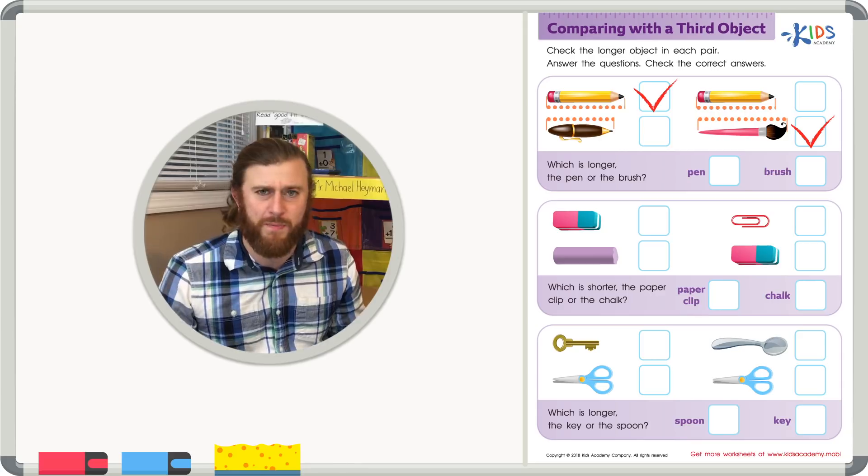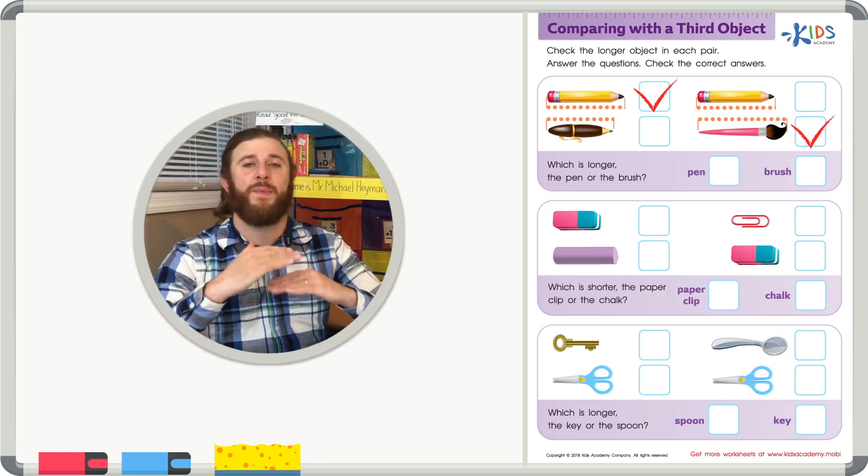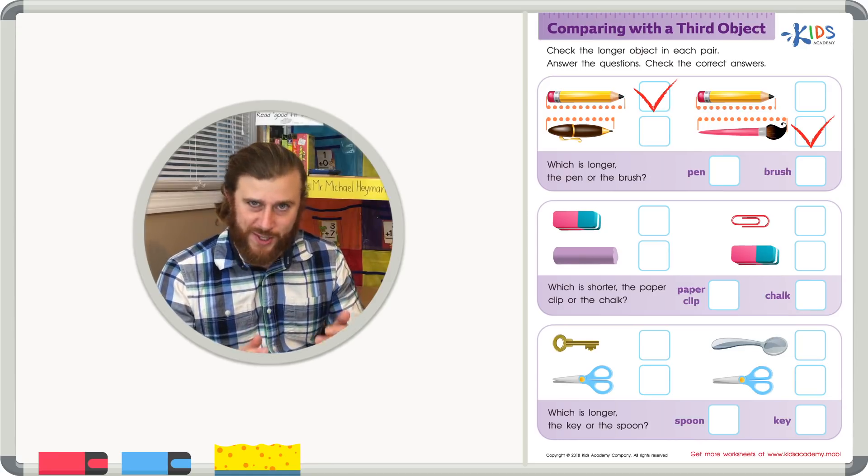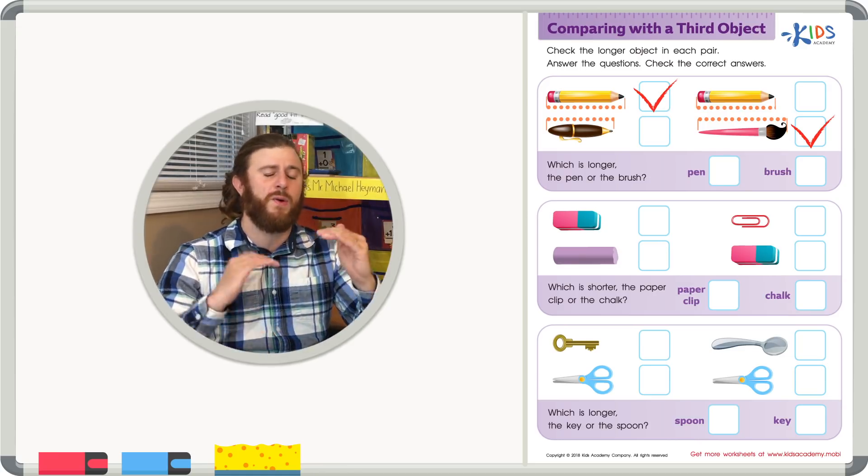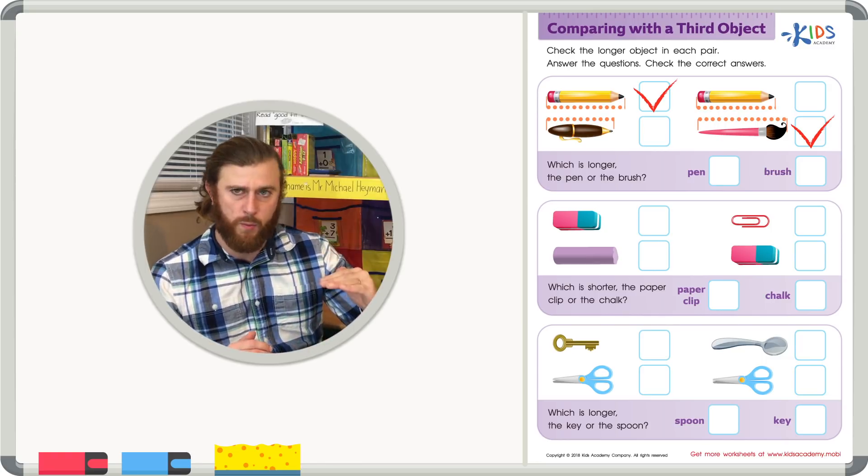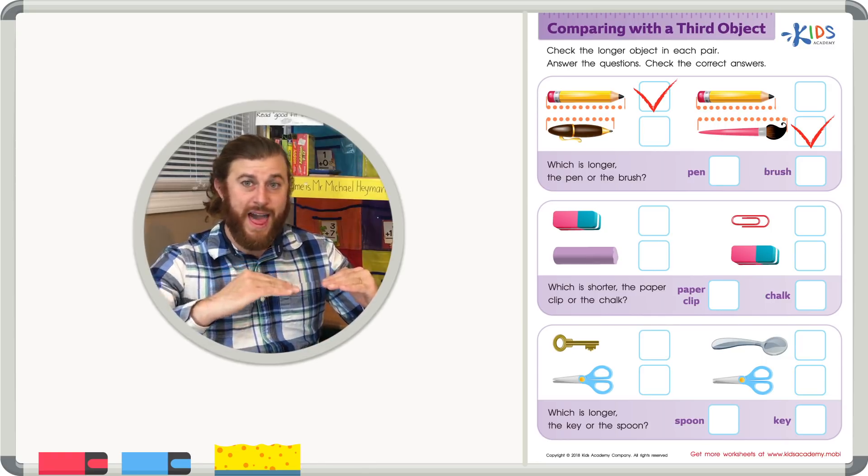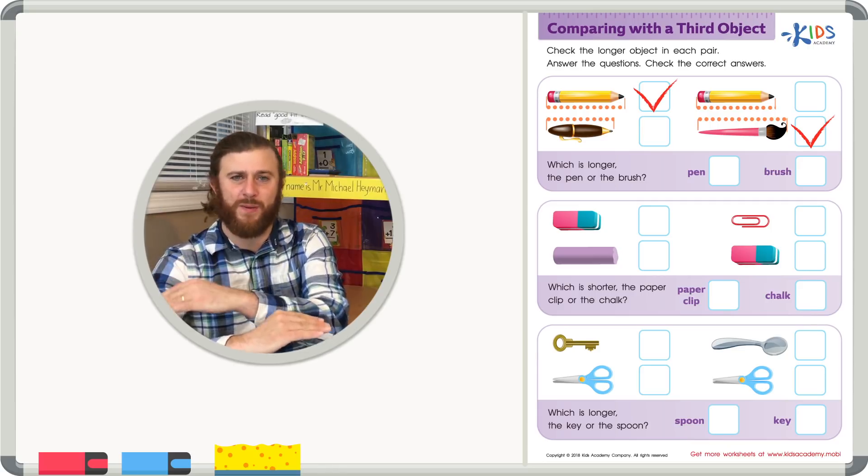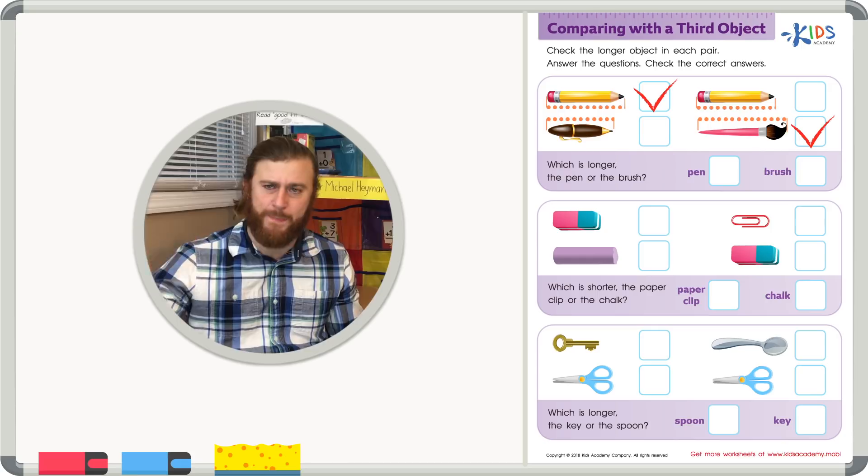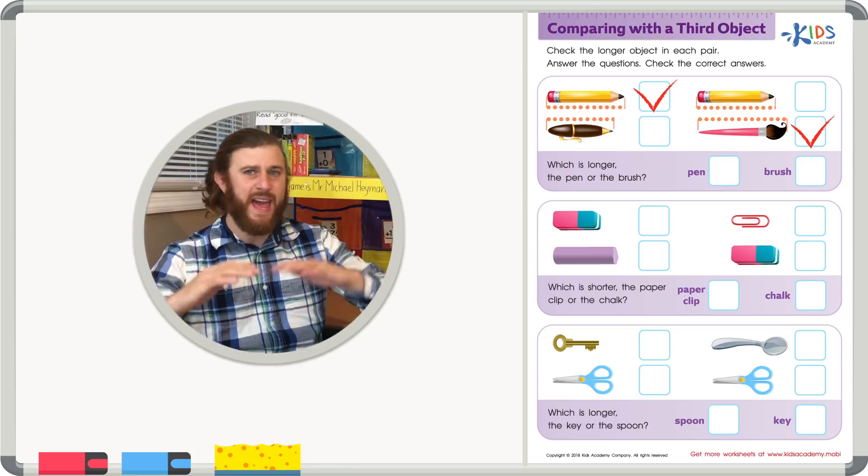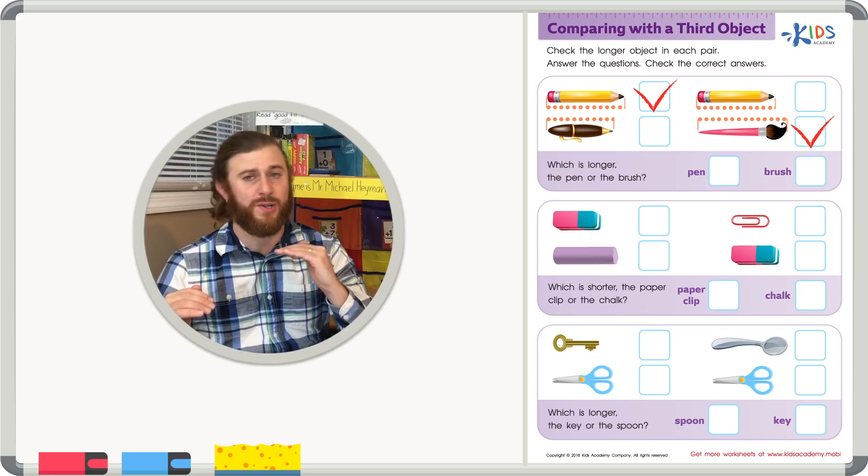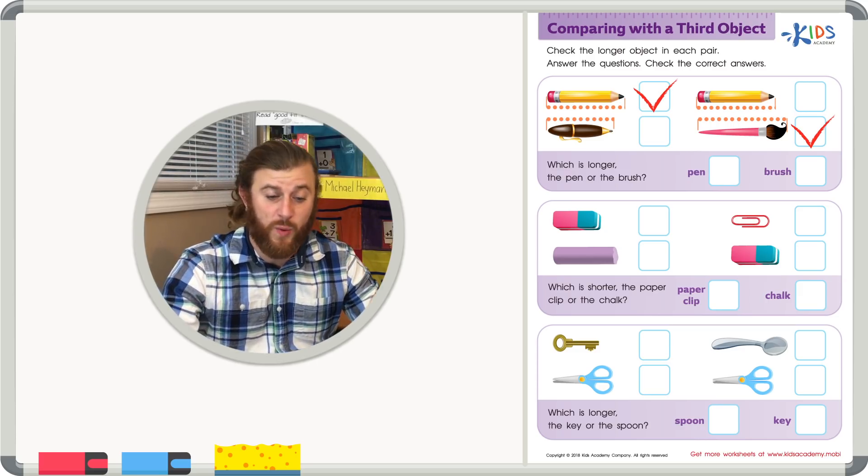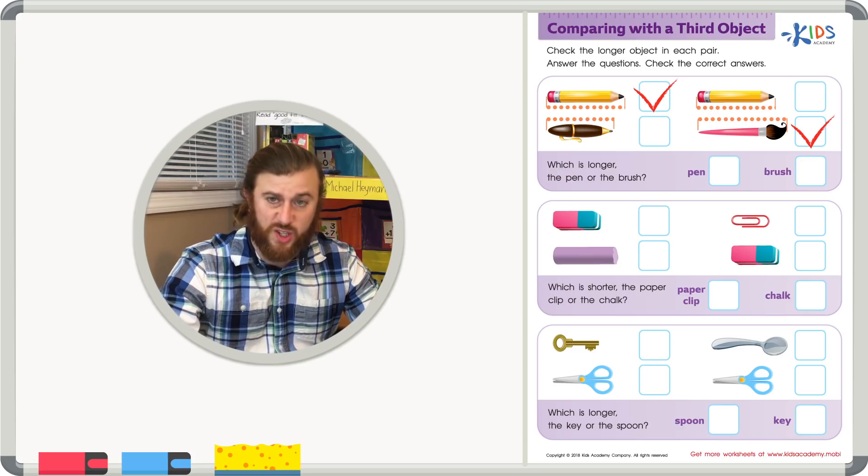You can picture them lined up on top of each other, but that might be a little bit tricky. But if you think about this pencil and imaginary line them all up knowing that the pen was shorter than the pencil and the paintbrush was longer than the pencil, you would know that the paintbrush was longer than everything in the picture. It's bigger than the pencil, so therefore it must also be bigger than the pen. So we know the brush is longer than the pen.